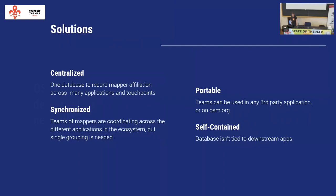OSM Teams presents solutions that would be really useful for anyone using an organized mapping team. It's a centralized database of a group of user IDs on OSM — that's the essential API. We see it as API glue connecting many different applications. It's portable so you can bring those teams into any third-party applications — Tasking Manager, OSM Cha, Map Roulette — synchronize teams across those different applications, and keep that data in its own accessible application without polluting the actual map data itself.